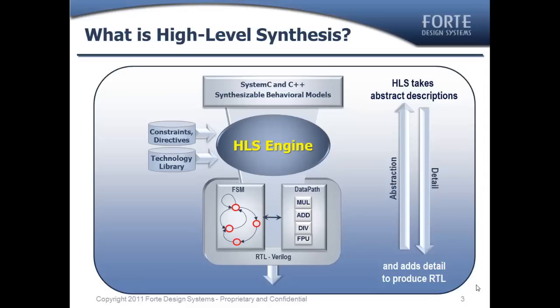Directives might include things like loop unrolling or the fact that you need the design to be pipelined. The technology library is also an input. This is required so that the tool can understand the constraints it has on the final implementation, and this is very important in terms of how fast certain operations — for example, a multiplier and adder — may be, and how large they may be in the context of the final design.